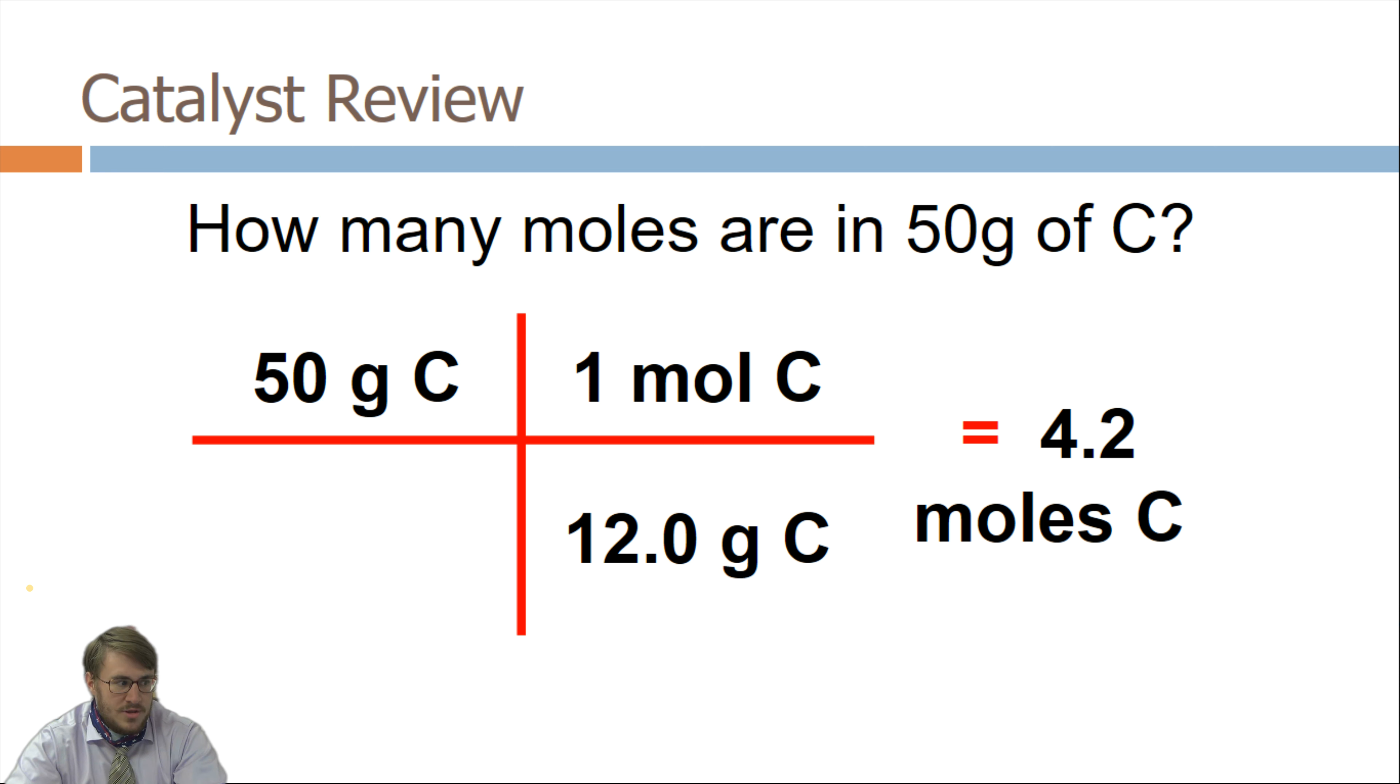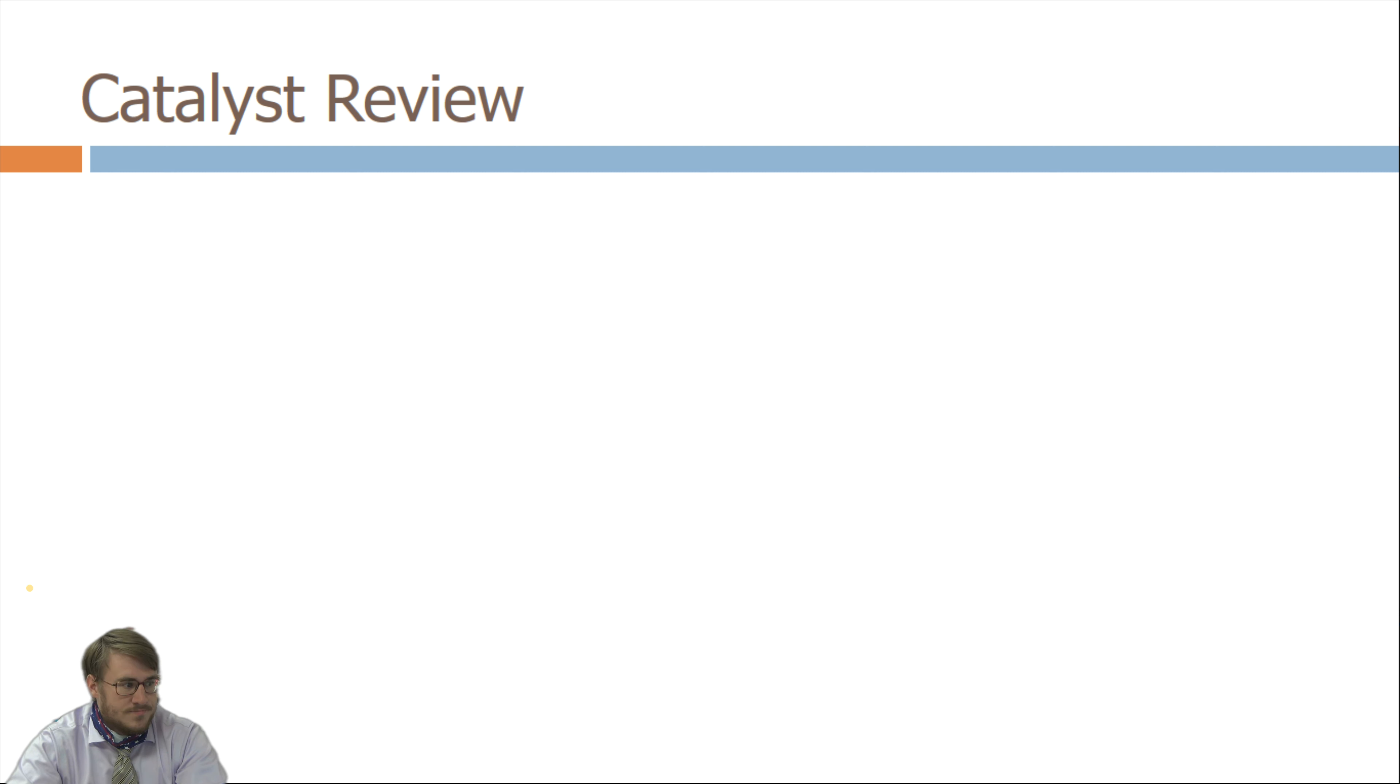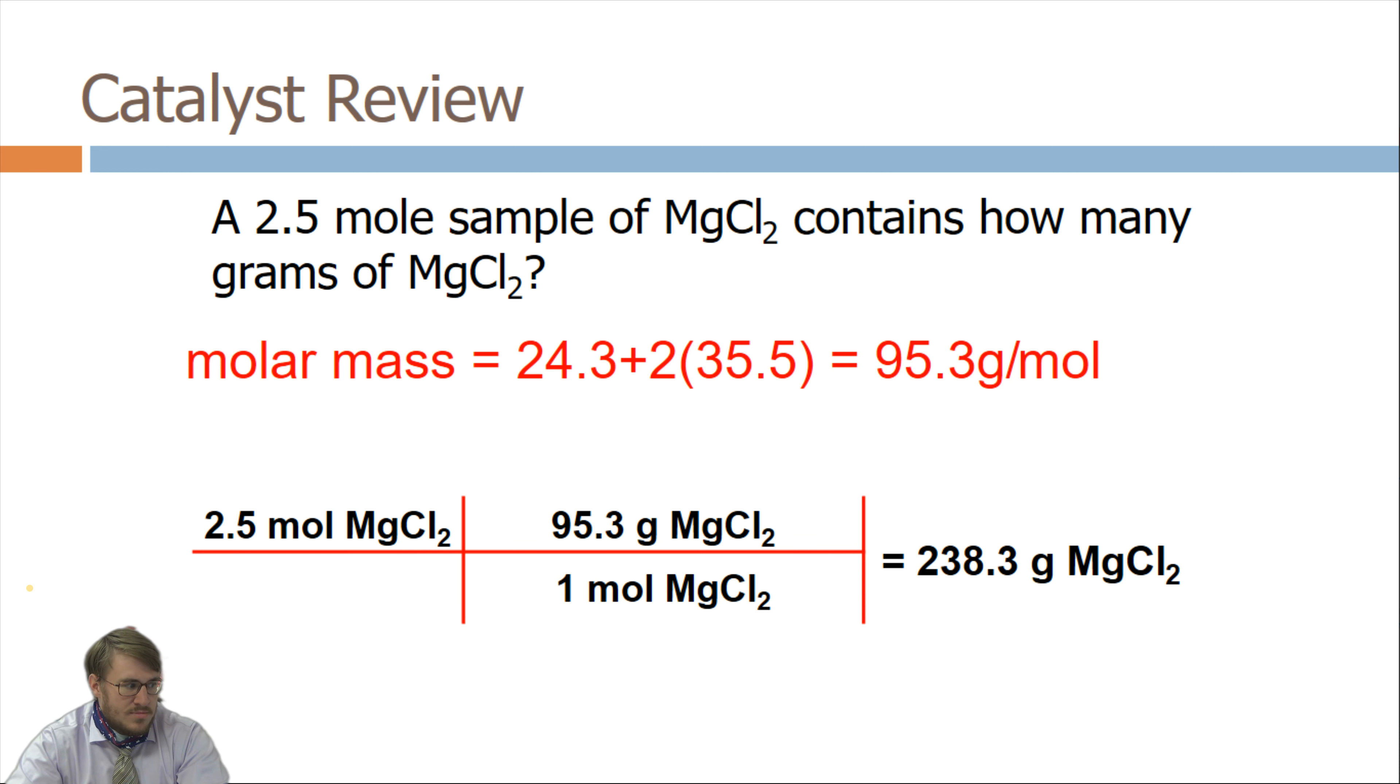I checked MMP number 3 as mentioned in these two problems. 50 grams given. Put it in the upper left. Asks for moles. Grams on the bottom to cancel. Molar mass next to grams. 1 mole times 1 over 12.0. 4.2 moles of C. 2.5 moles given. Got to find the molar mass. 2.5 moles given MgCl2. Convert to grams. Molar mass next to grams. 1 mole times divide. You get the mass.